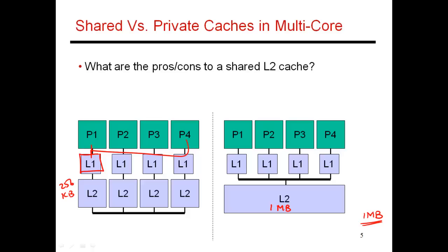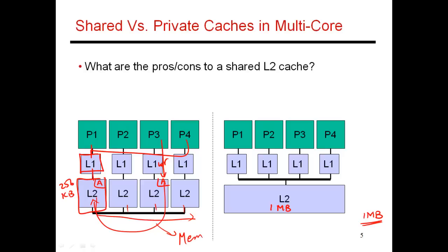Now if you have a miss in L1, I'm associating a private 256-kilobyte L2 cache bank with that L1 — that's the first structure that gets looked up. If there's a miss in this L2, then before going off-chip, you also have to check if a copy of that block exists in one of the other L2 cache banks. For example, if there's a copy of block A in P3's private L2 and P3 has done a write into that block, that's the most recent and up-to-date copy. So you send out a broadcast saying you're looking for A; every other cache snoops on the bus, and P3's private L2 bank says it has the most up-to-date copy and returns it. If P3 does not have a copy of A, then the request goes off to memory. This gives you a sense for what needs to be done with the private L2 organization when you have a miss.